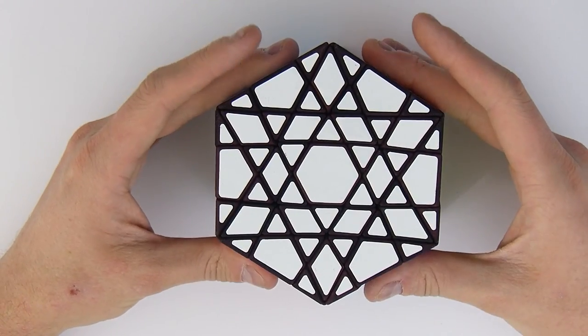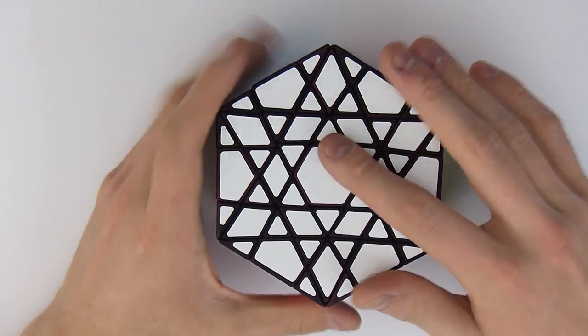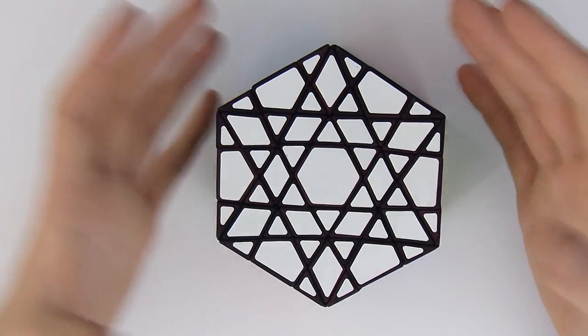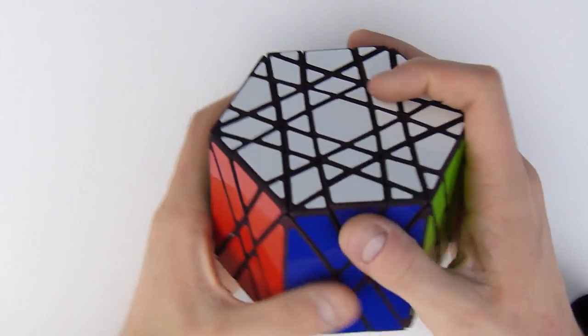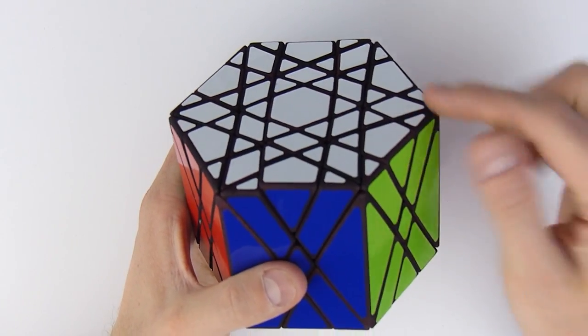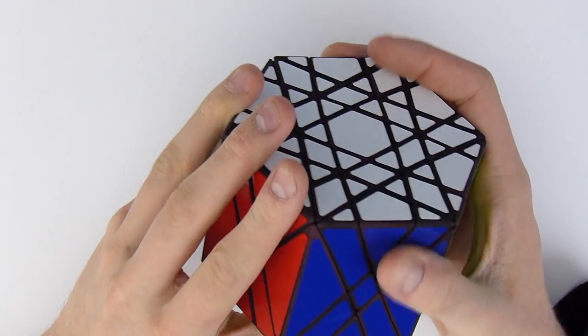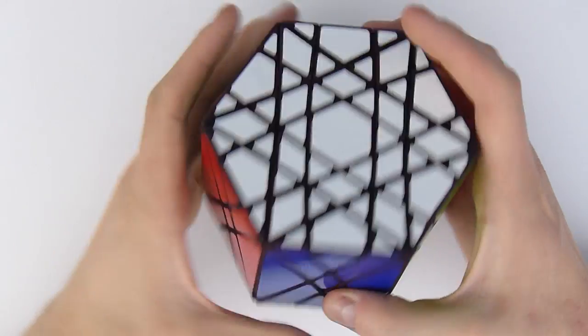So it should be Hexaminx but the thing is Hexaminx is already taken so I called it Hex Ultimate to refer to the Pentultimate and it is a deep cut version of the dino hexagonal prism. The thing is this puzzle is one of the biggest that I've released this year.